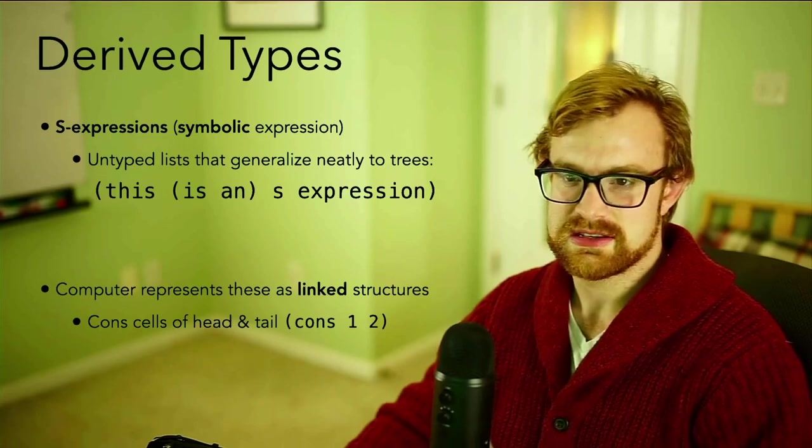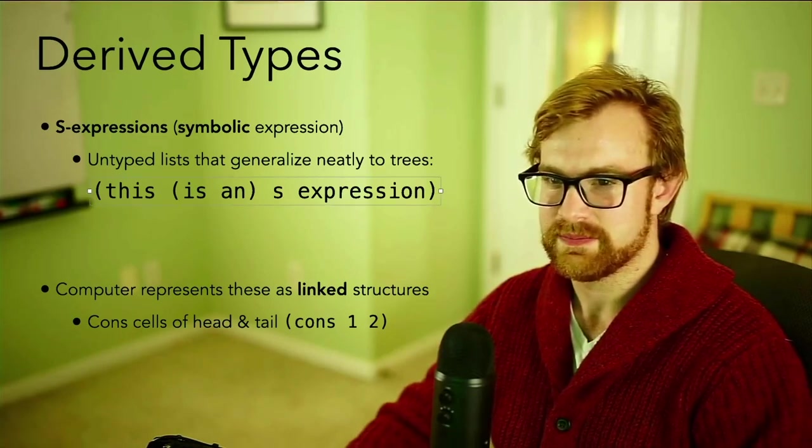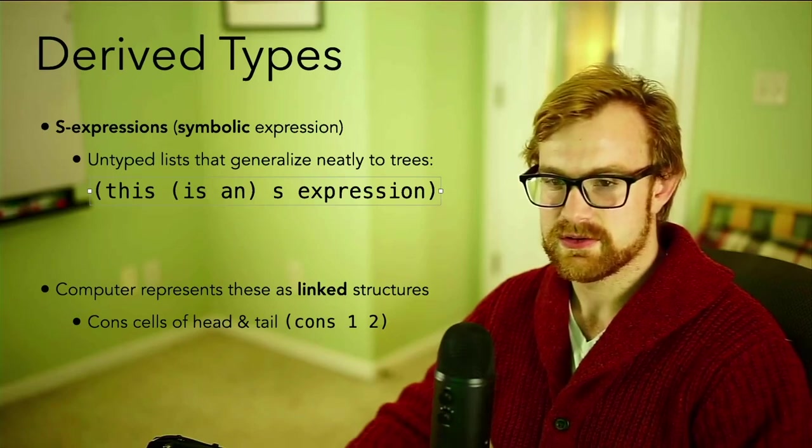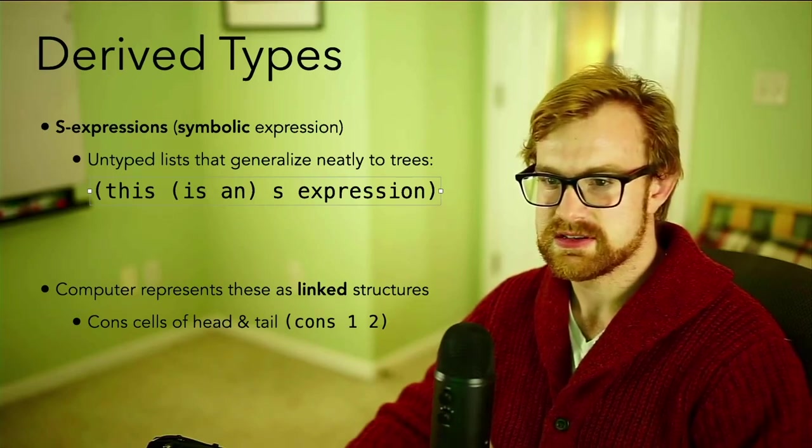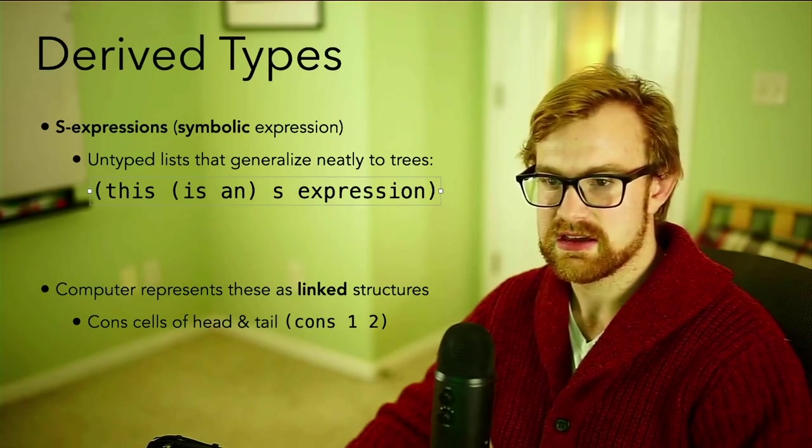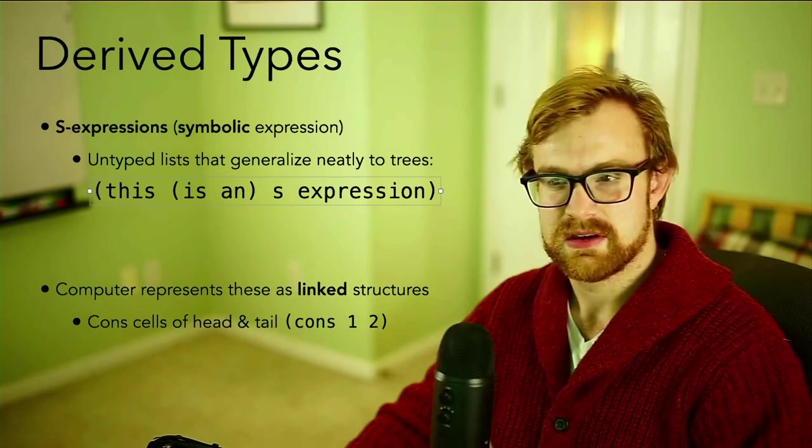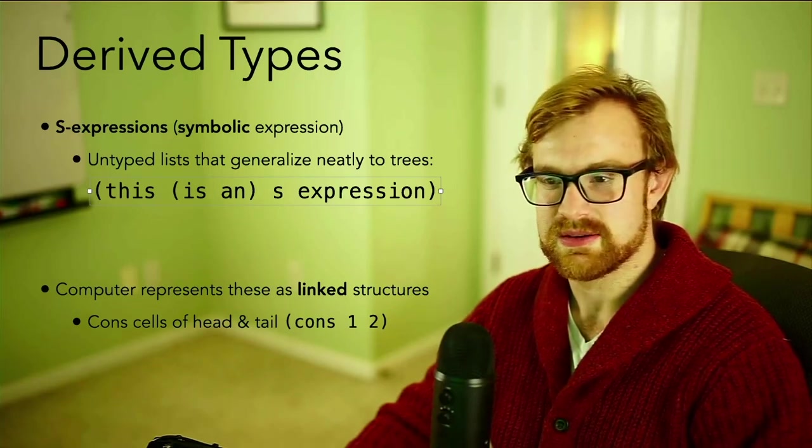Let's look at this S-expression right here. We've got this is an S-expression. It's got four different components. The first is the symbol 'this'. The second is a sub-expression, which is a sub-list containing 'is an'. The third is the symbol 'S'. And the fourth is again the symbol 'expression'.